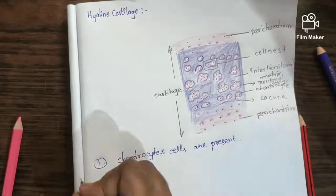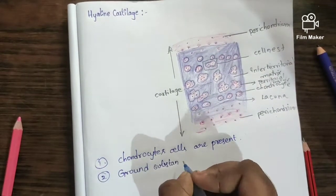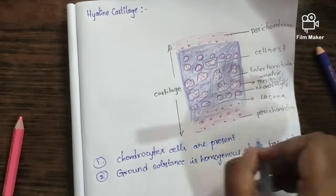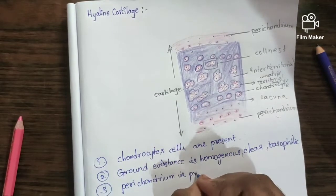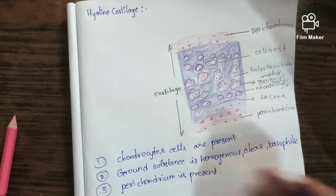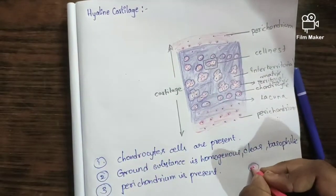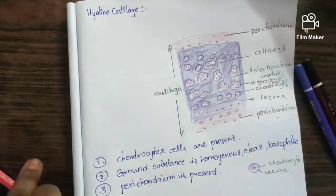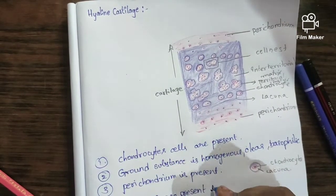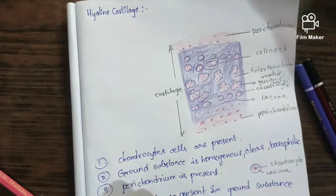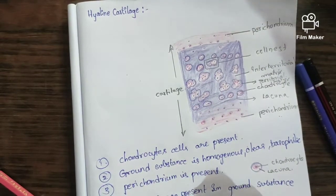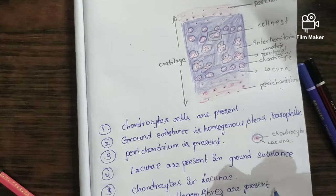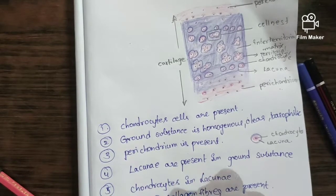I'm listing the points. Histology is about what we see in the diagram, so first we should list out those points. Chondrocyte cells are present; the ground substance is homogenous, clear, and basophilic; and perichondrium is present. To show where the lacuna is, the lacuna is the space between the chondrocyte and territorial matrix.